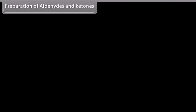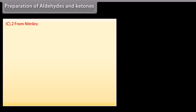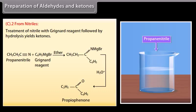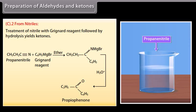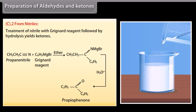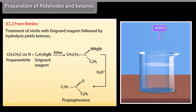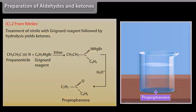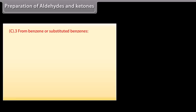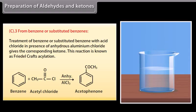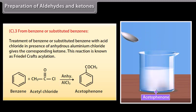Preparation of ketones from nitriles: treatment of a nitrile with a Grignard reagent followed by hydrolysis yields ketones. Grignard reagent in ether reacts with propenenitrile, forming an intermediate, which upon hydrolysis gives propiophenone. From benzene or substituted benzenes: treatment of benzene or substituted benzene with an acid chloride in the presence of anhydrous aluminium chloride gives the corresponding ketone. This reaction is known as Friedel-Crafts acylation.